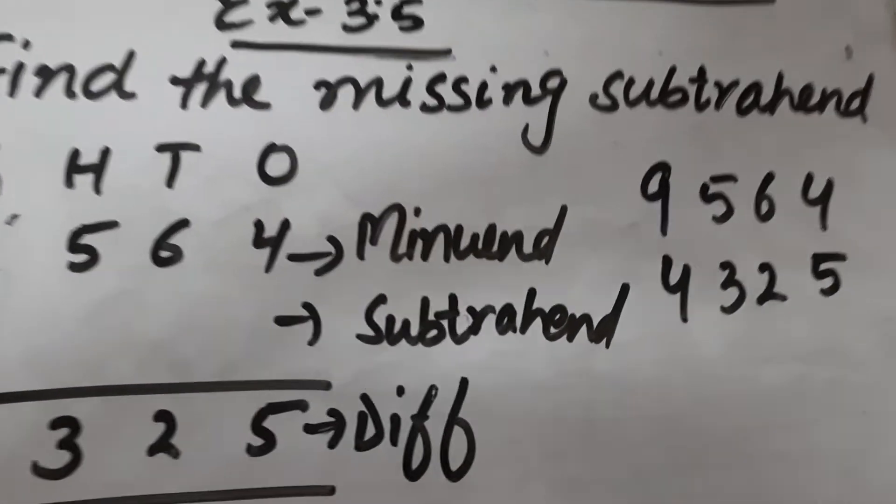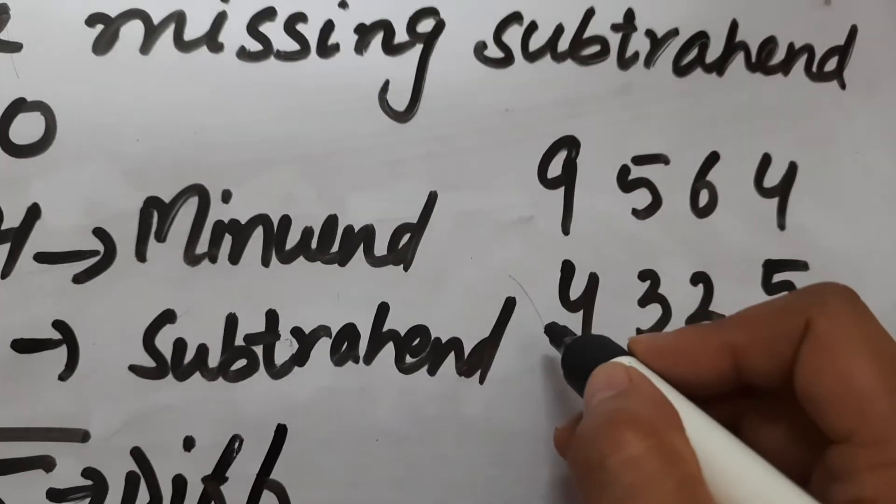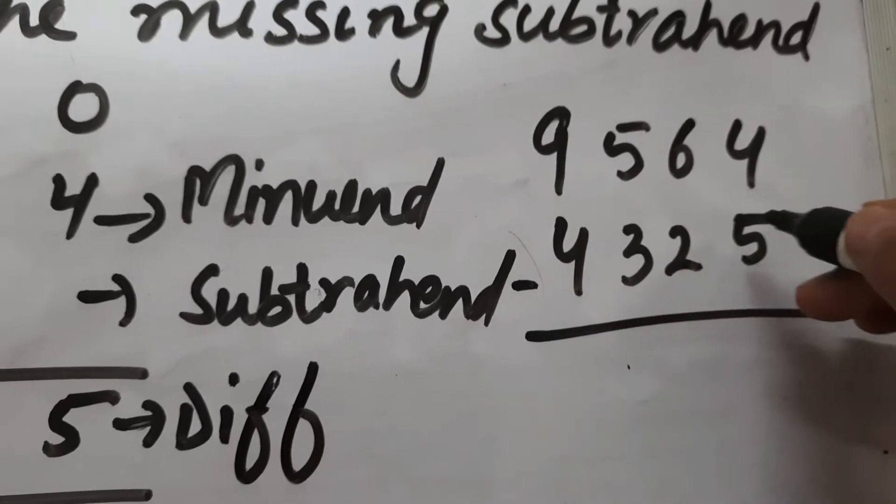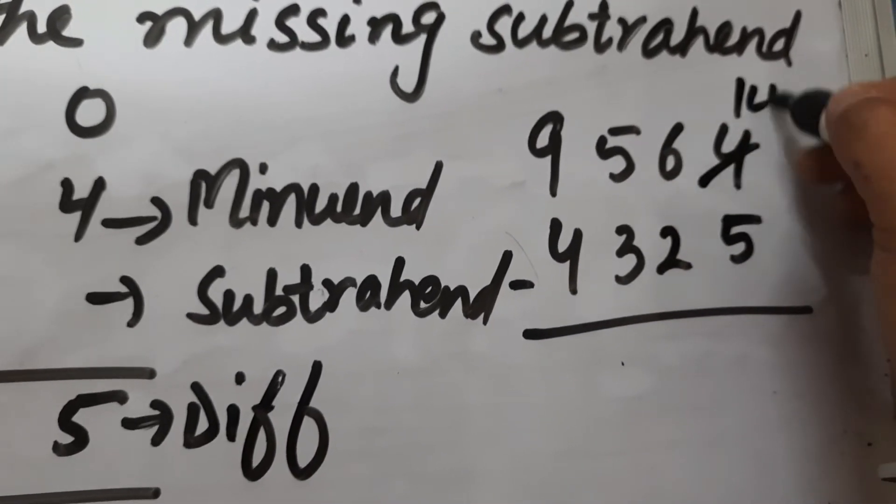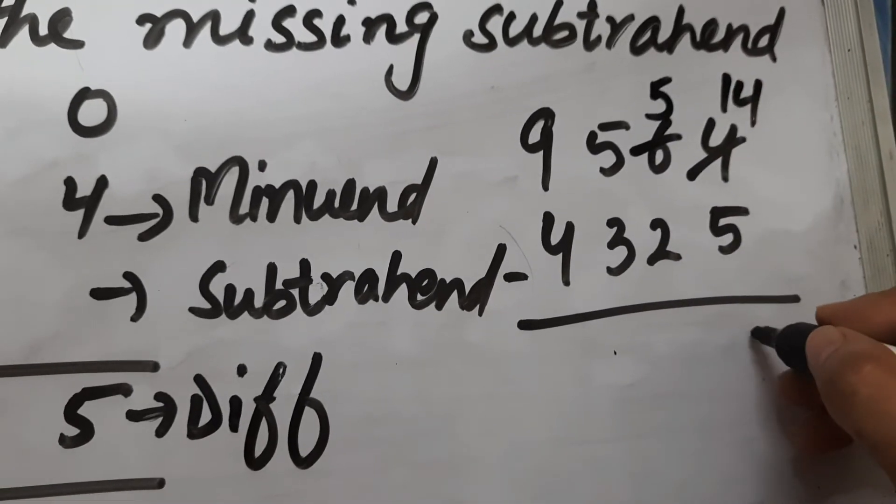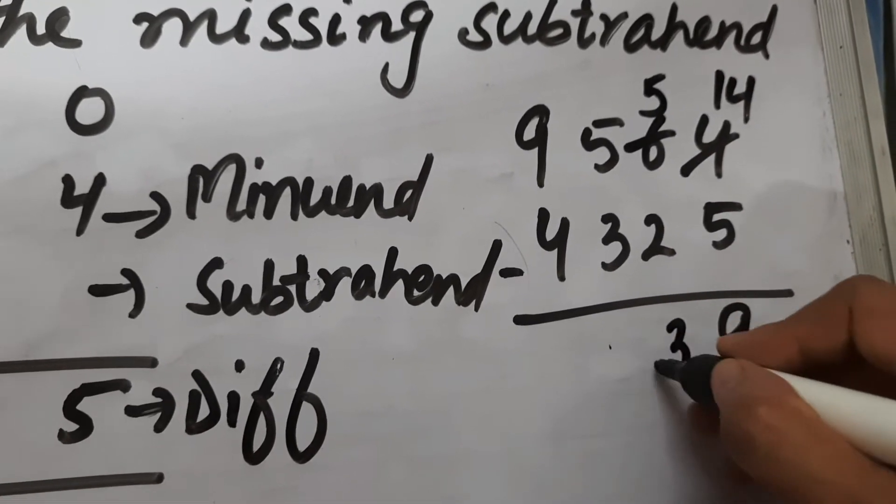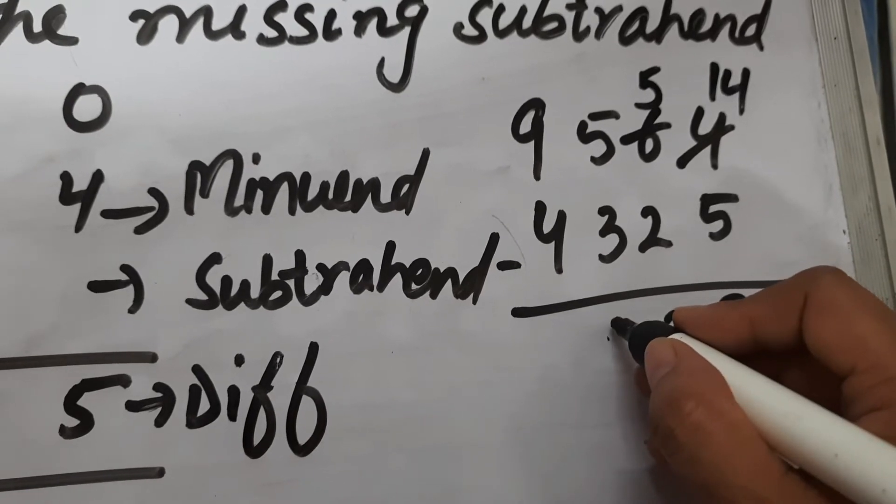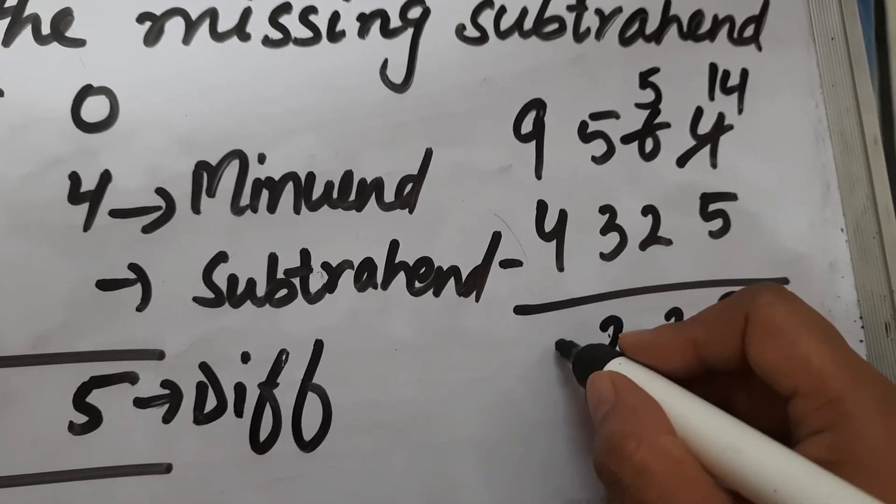We will subtract these two numbers. We cannot subtract 5 from 4, so this becomes 14 and this becomes 5. 14 minus 5 is 9, 5 minus 2 is 3, 5 minus 3 is 2, and 9 minus 4 is 5.